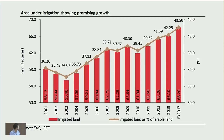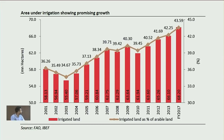The area under irrigation has grown from around 60 million hectares in 2006 to 68 million hectares in 2017, which is a promising trend. The government is taking initiatives to increase irrigated area, which has shown positive results. Government plans to undertake over 250 new irrigation projects with the potential to irrigate roughly 20 million additional hectares of land.